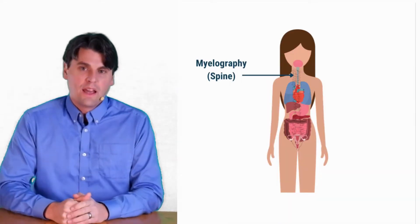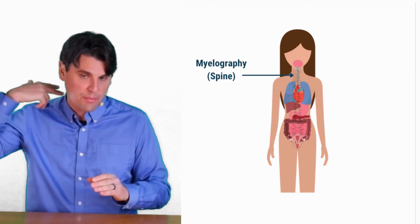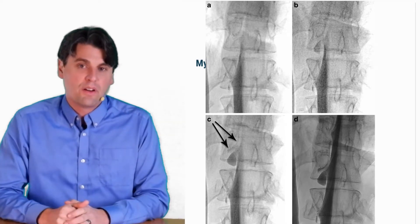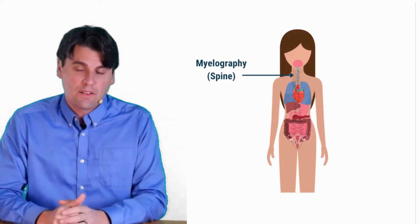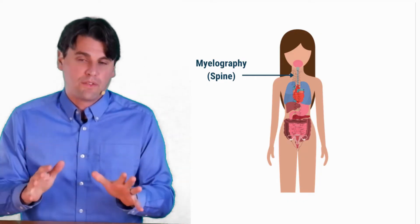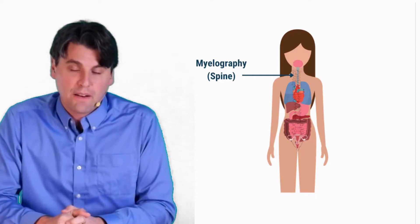So a myelogram is the idea of injecting contrast into the cerebral spinal fluid in the spine. And in that way, you're going to be able to visualize details in the spine even better than you could if you're just looking at the contrast natively of the cerebral spinal fluid.